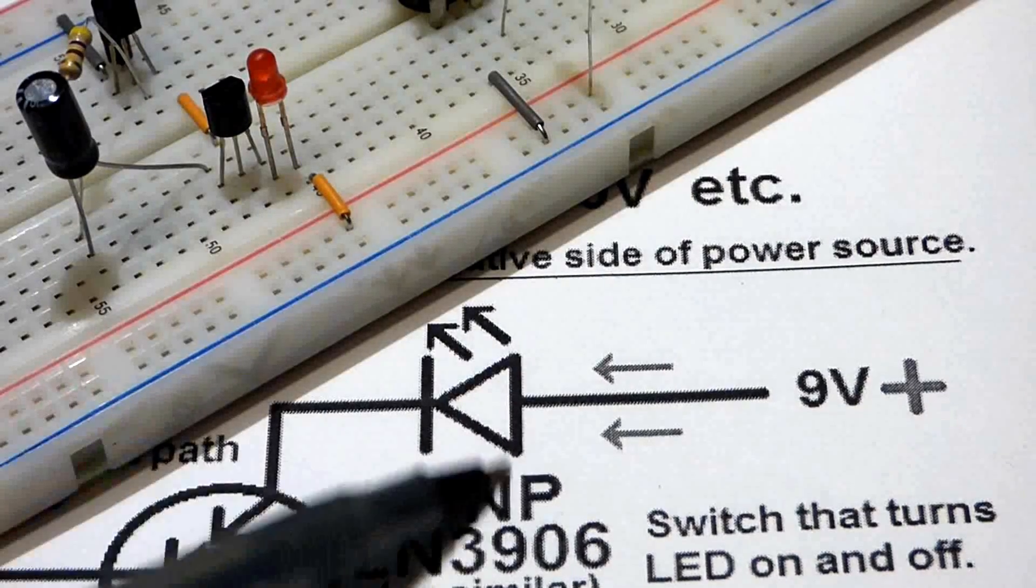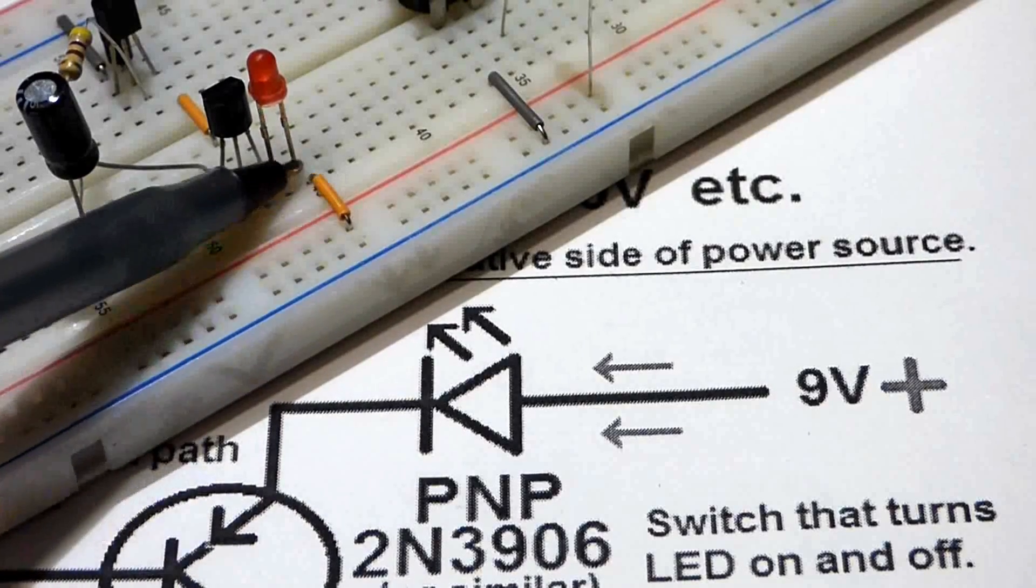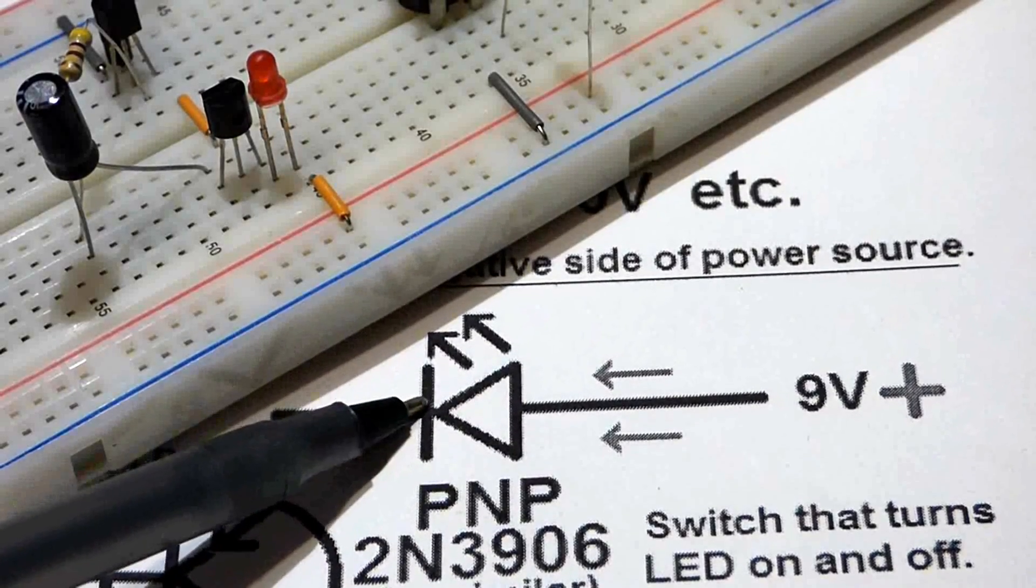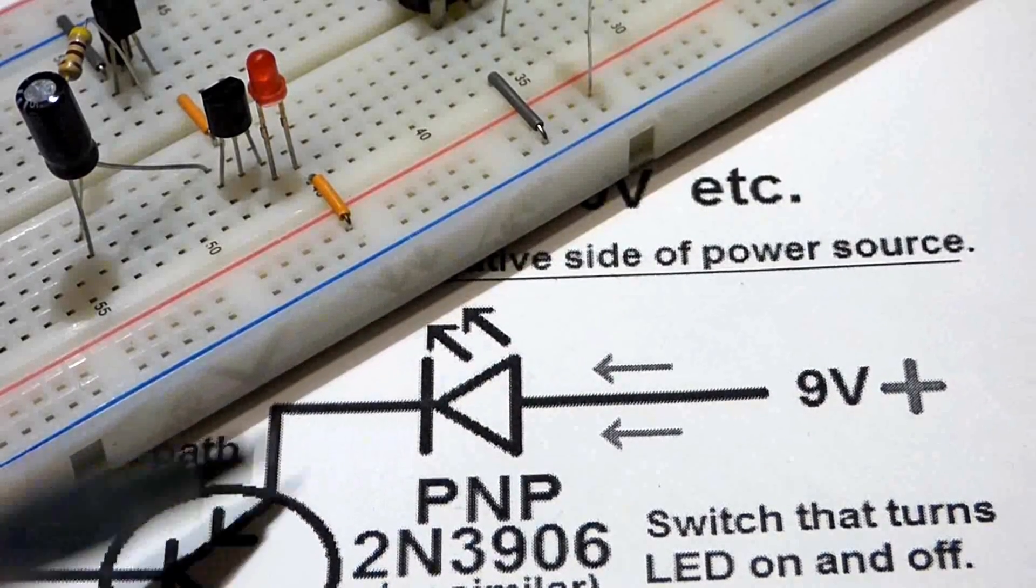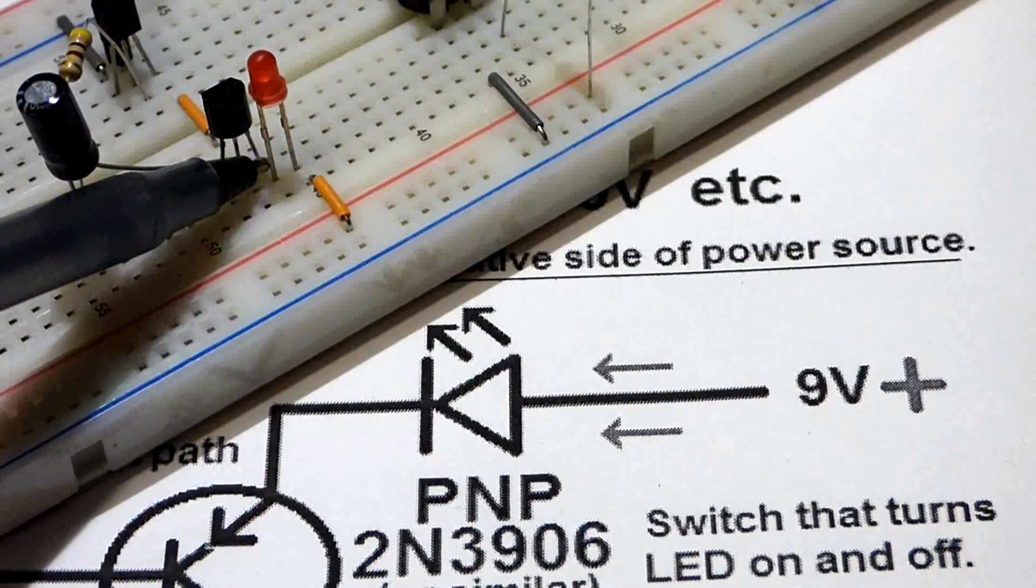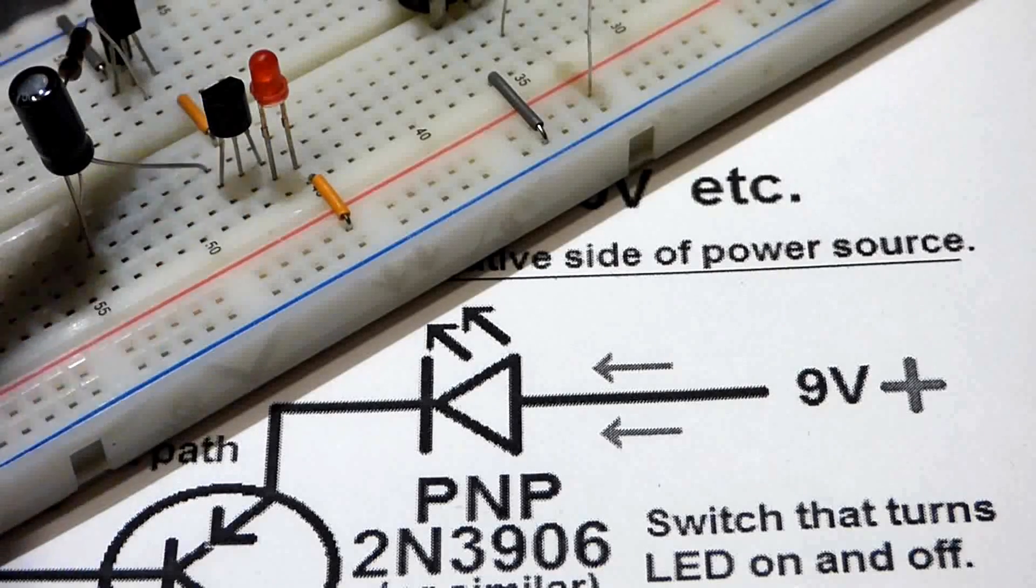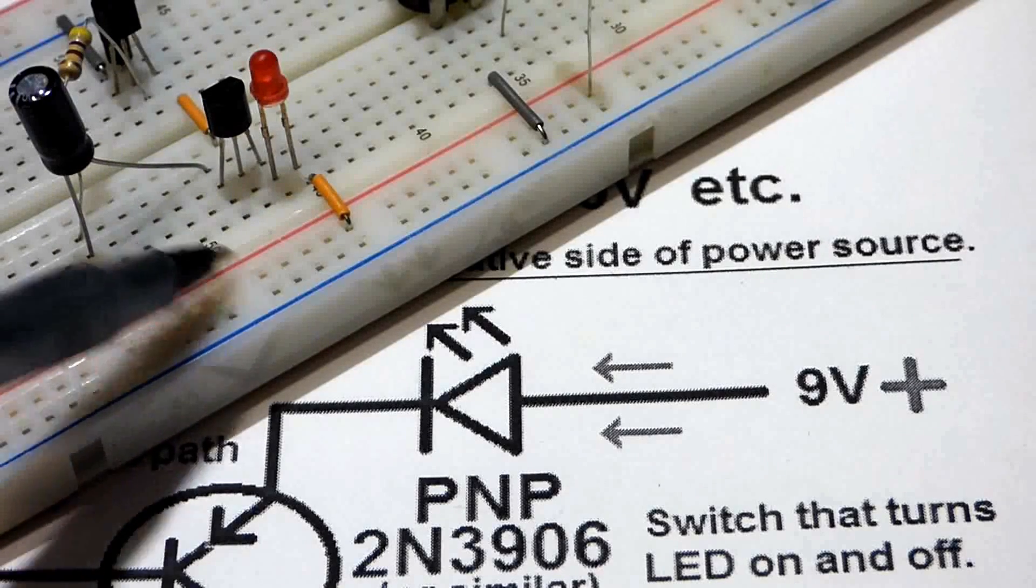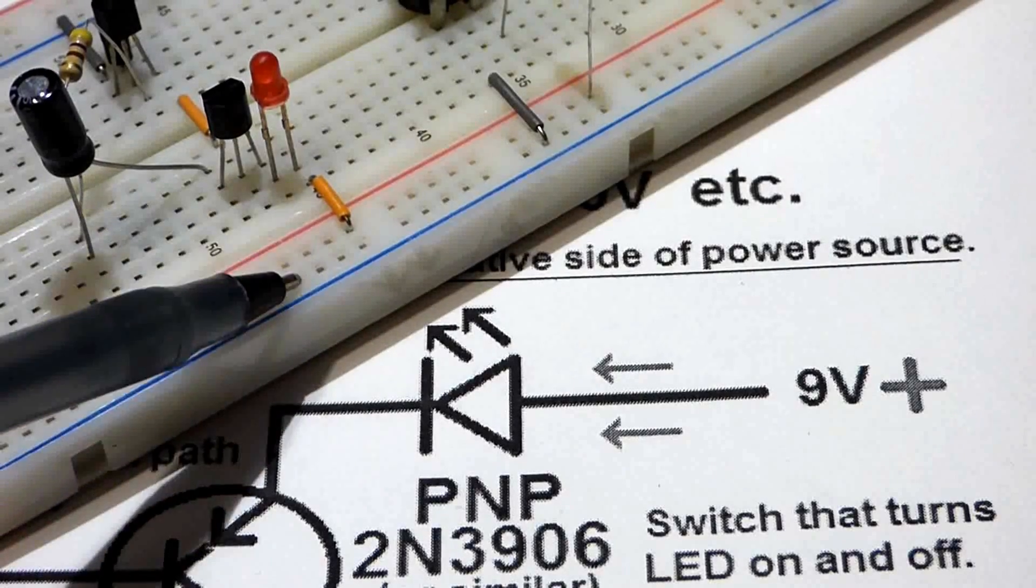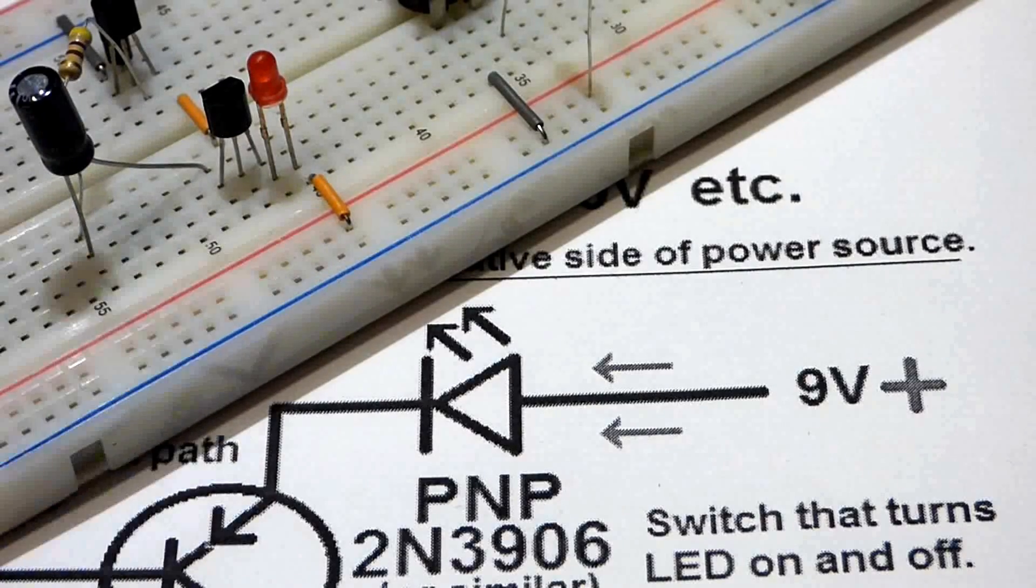Now we have the LED positive coming to the long lead—long lead is always the anode. The cathode, the short lead, that comes to the emitter of the PNP transistor. So in this case the emitter is on top because the flat side is to the left. And all we have to do is ground this one, and that'll make a circuit here when this is turned on.